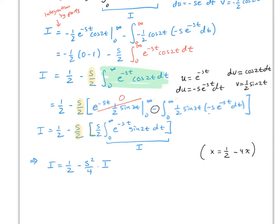Now let's find the Laplace transform of a piecewise function. Here f(t) equals 1 for 0 ≤ t < 2, and -1 for t ≥ 2.